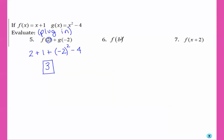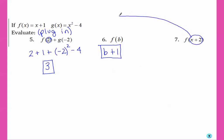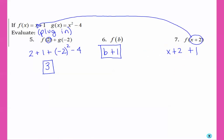Number 6 says f of b — what it's saying is take b and plug it in where the x was, so we would just get b plus 1. Number 7, f of x plus 2 means take the whole thing, x plus 2, and plug it in where the x is in f of x. So we'd have x plus 2 plus 1. Since there's nothing out in front of these parentheses, there's nothing to distribute, so we can combine like terms and get x plus 3.